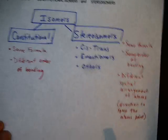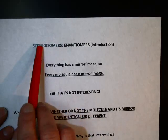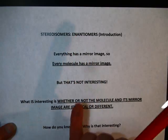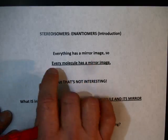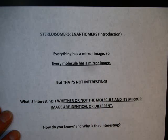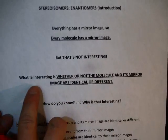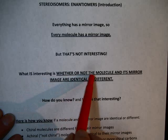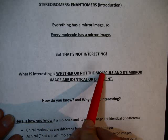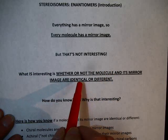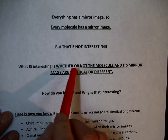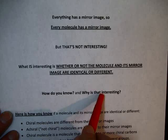Now let's take a look at enantiomers, which are a type of stereoisomer. Everything has a mirror image — this red pen, my finger, everything. So every molecule has a mirror image. What is interesting is whether the molecule and its mirror image are identical to each other or different from each other. How do we know which is which, and why do we care?